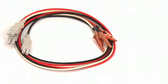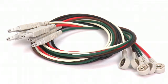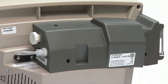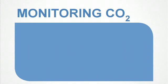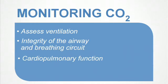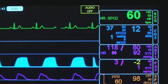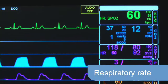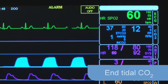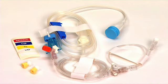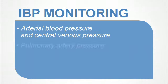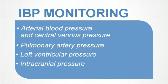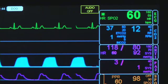The ECG leads are provided in three or five lead alligator or snap options. The Advisor Monitor features sidestream capnography as an optional parameter. Monitoring CO2 provides a means to assess ventilation, integrity of the airway and breathing circuit, and cardiopulmonary function. You can also observe the capnography waveform on the display and monitor the respiratory rate, end-tidal CO2, and inspired CO2. Optional invasive blood pressure monitoring includes two invasive pressure channels for measuring direct arterial pressure, central venous pressure, and various other hemodynamic parameters, and also features a waveform display.